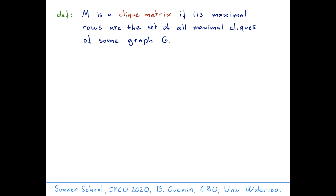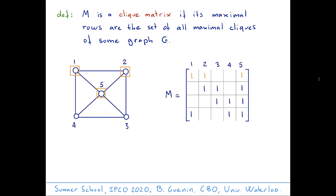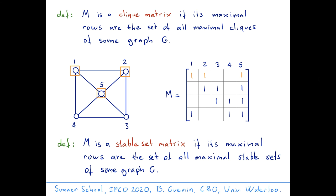A 0-1 matrix M is a clique matrix if its maximal rows are the characteristic vectors of all maximal cliques of some graph G. For example, here is a graph G with five vertices 1, 2, 3, 4, 5 and a corresponding matrix M whose columns are indexed by those vertices. The maximal cliques of the graph correspond to the maximal rows of M — for instance, the set {1, 2, 5} is a maximal clique and it corresponds to a maximal row of M.